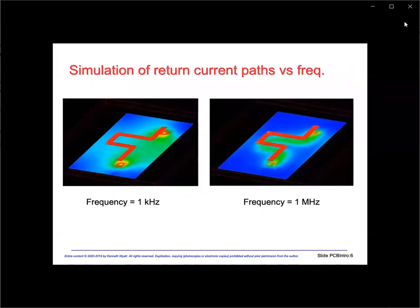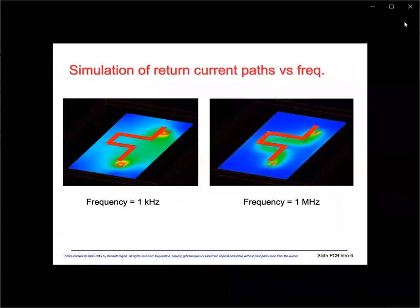Here's a simulation of this concept with the return conduction current shown in green. For the one kilohertz example on the left, the return current is spread out and basically travels from the load directly back to the source. In the one megahertz example on the right, the return current is located directly underneath the circuit trace. This will be very important when we partition our circuit board between analog and digital circuitry.